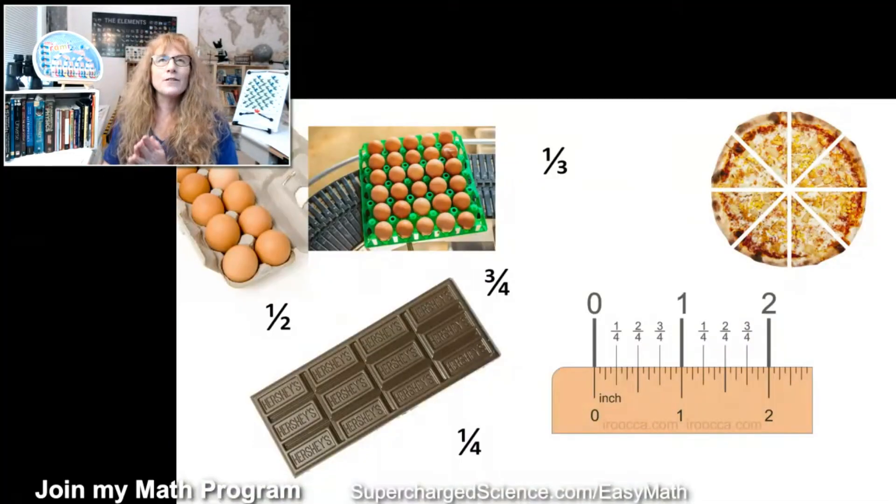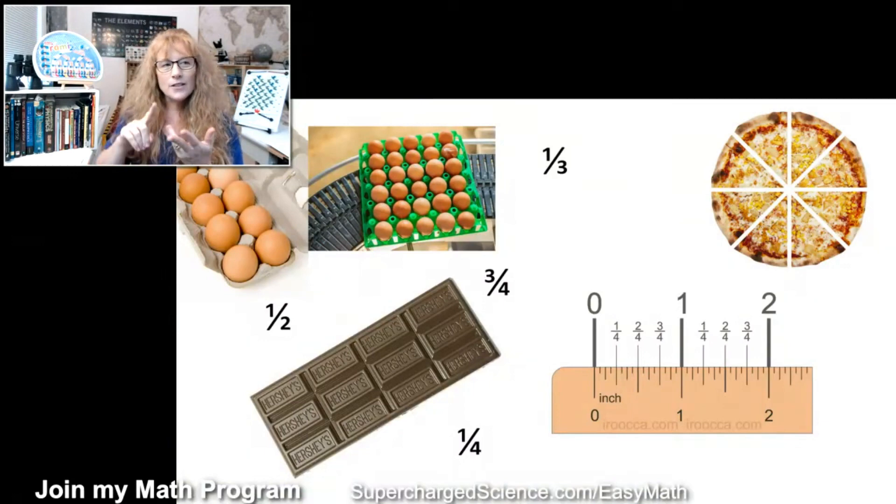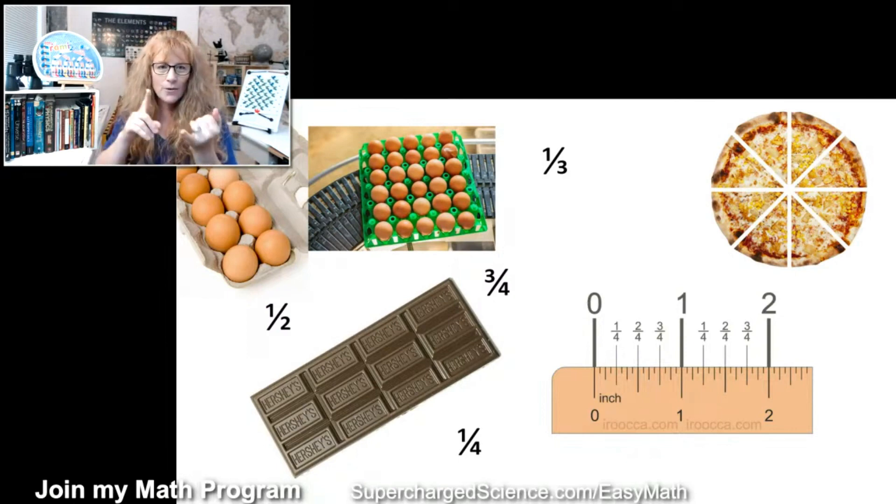Fractions are, okay, well, let's back up. Numbers like zero, one, two, three, four - those are whole numbers. Whole numbers count units of things, right? Like one cake, five pizzas, seven sets of nostrils.